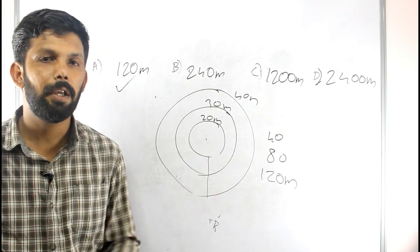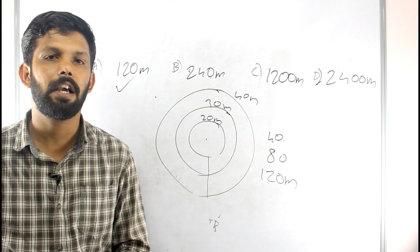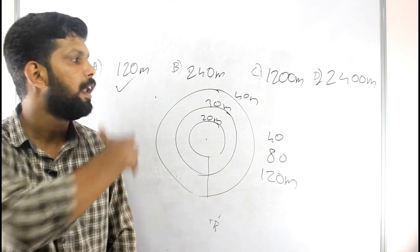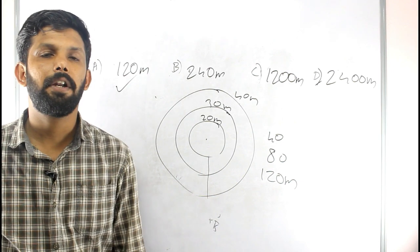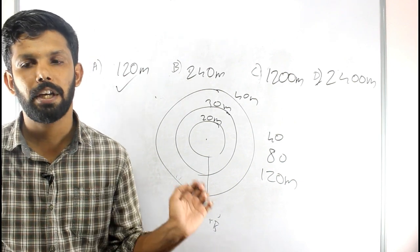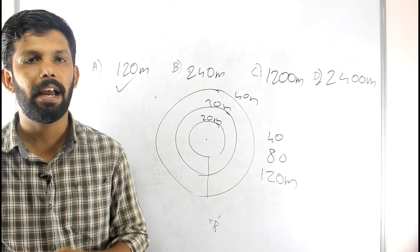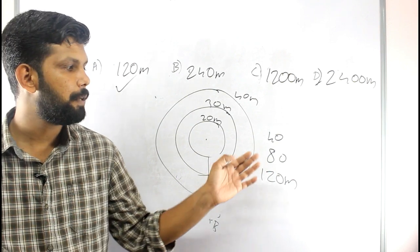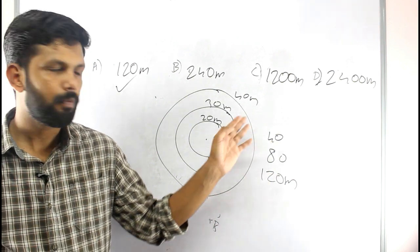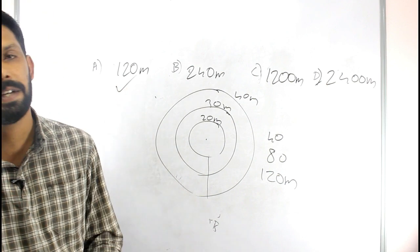So the answer is 120 meters. If you have concentric circles with a lengthy question, the solution using LCM will be easy. The LCM is 120 meters and that is the answer.